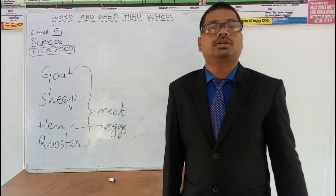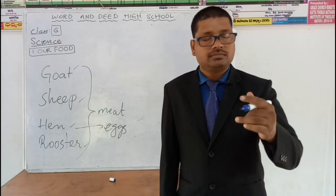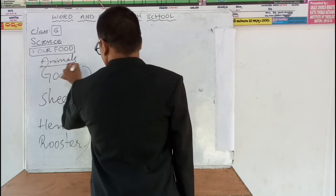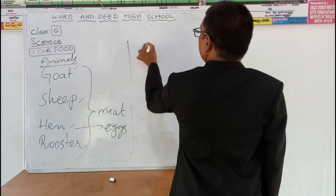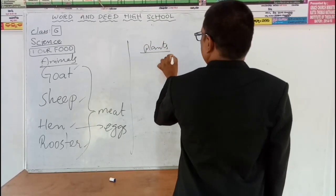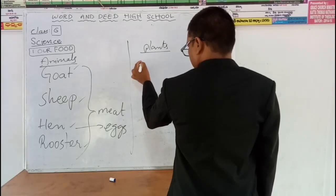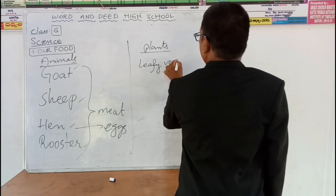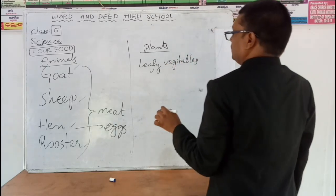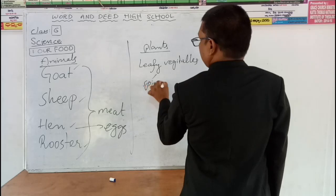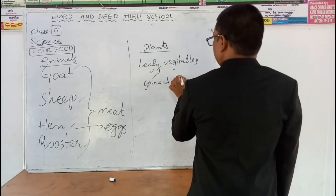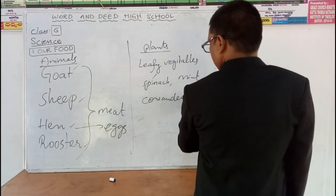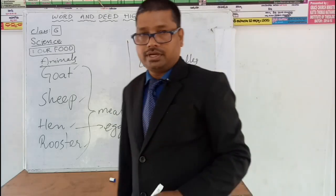Now, let us talk about examples for the foods that we get from plants. We get food from animals and we get food from plants as well. You give examples for plants — plants like leafy vegetables, like spinach, mint, coriander, etc. These are the foods that we get from plants.